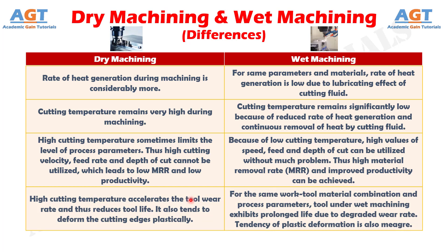Number 9: In dry machining, high cutting temperature accelerates the tool wear rate and thus reduces tool life. Dry machining also tends to deform the cutting edges plastically, whereas in wet machining, for the same work-tool material combination and process parameters, the tool exhibits prolonged life due to degraded wear rate. The tendency of plastic deformation is also meager.